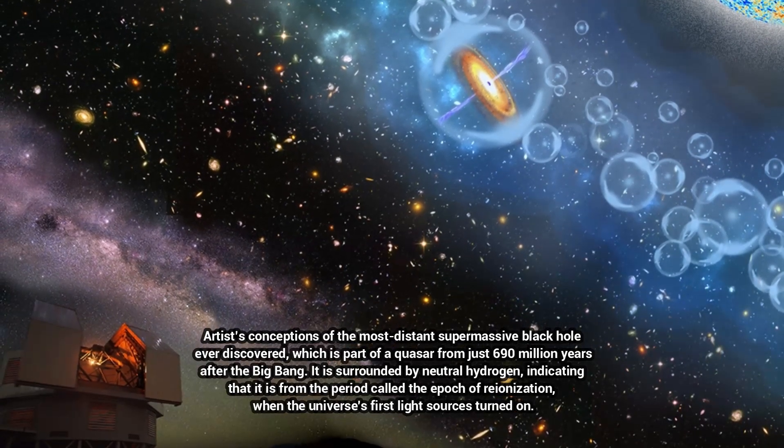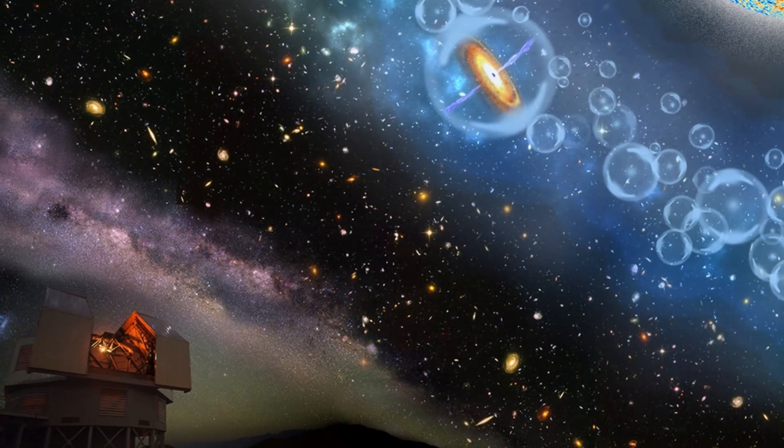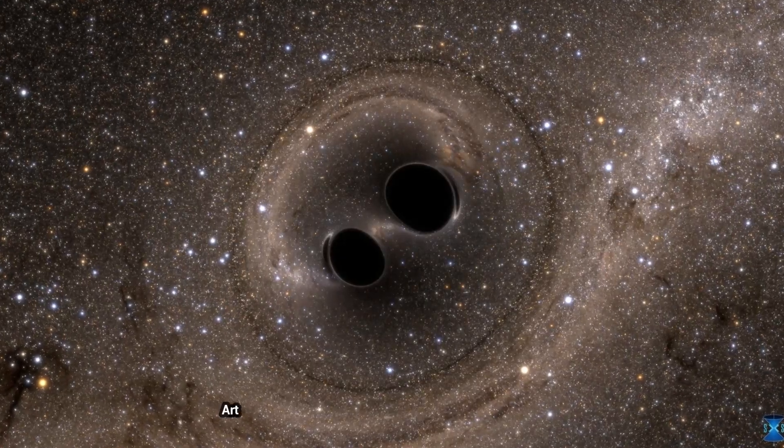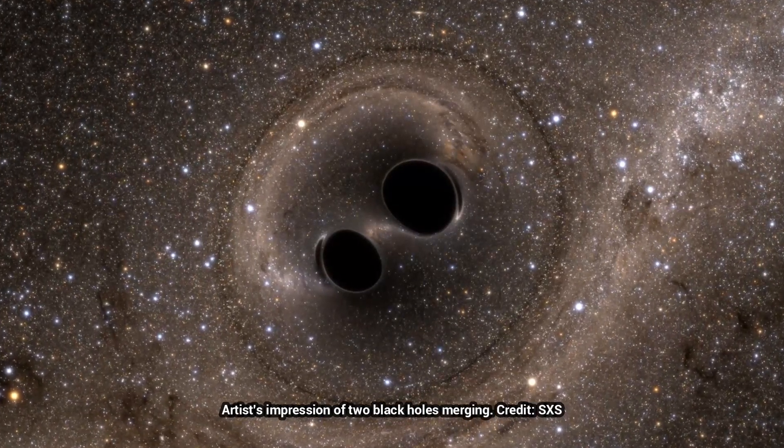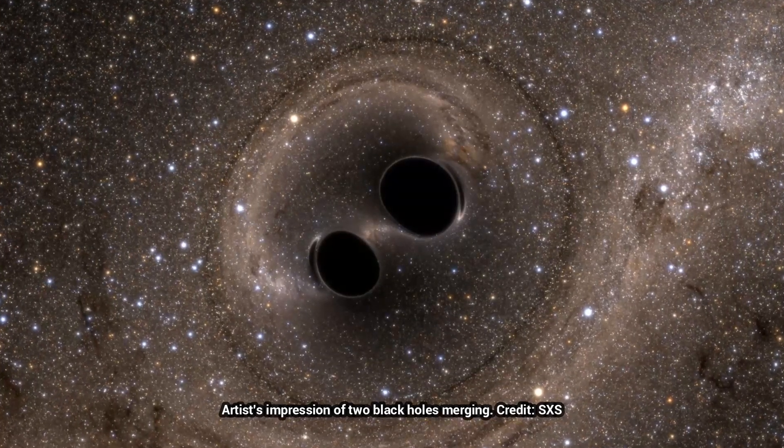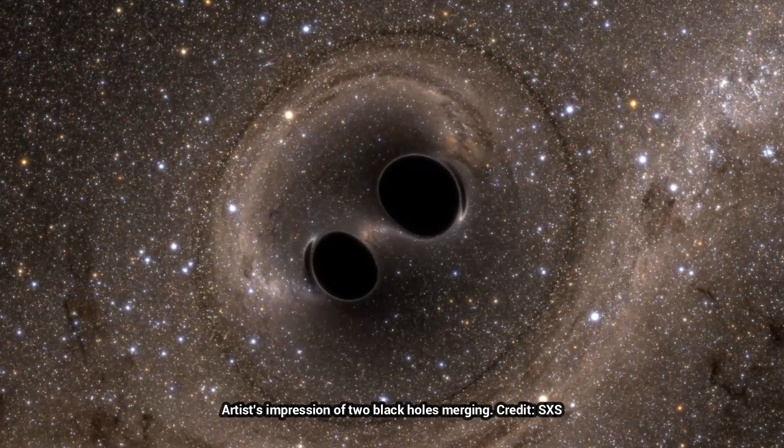Embedded in these gravitational waves are specific frequencies, or tones, which are akin to individual notes in a musical chord. Now, researchers have detected two such tones for the first time in the ring down of a newly formed black hole.